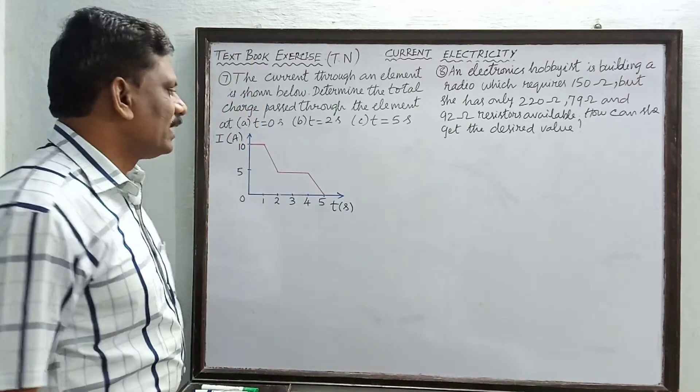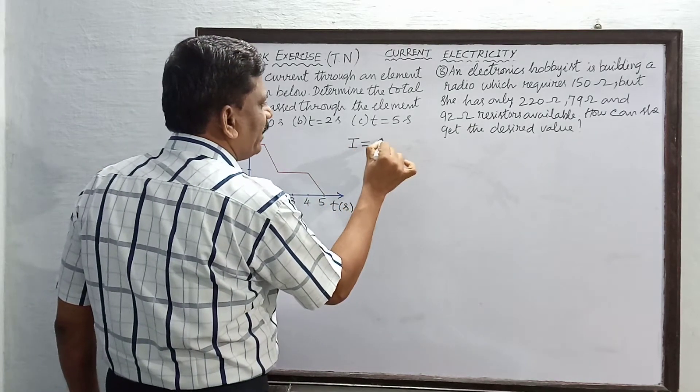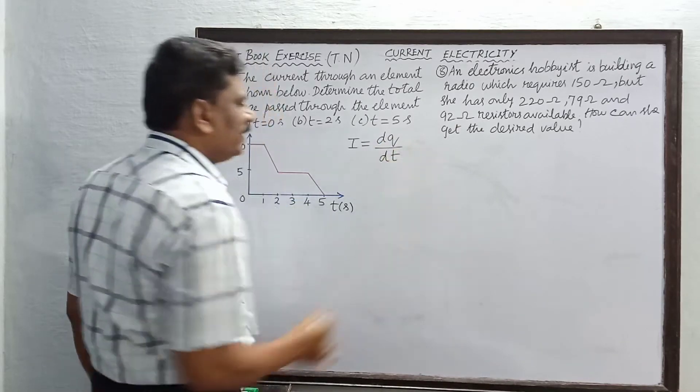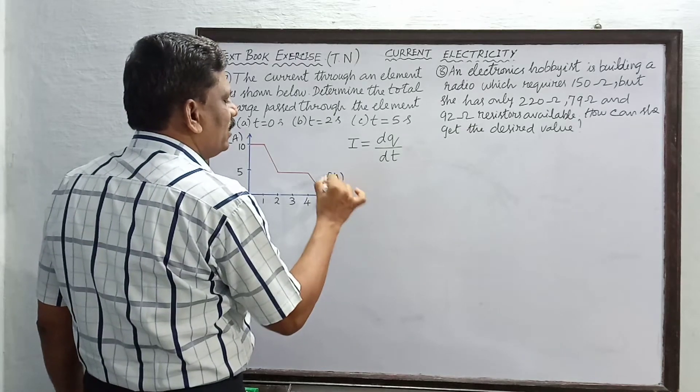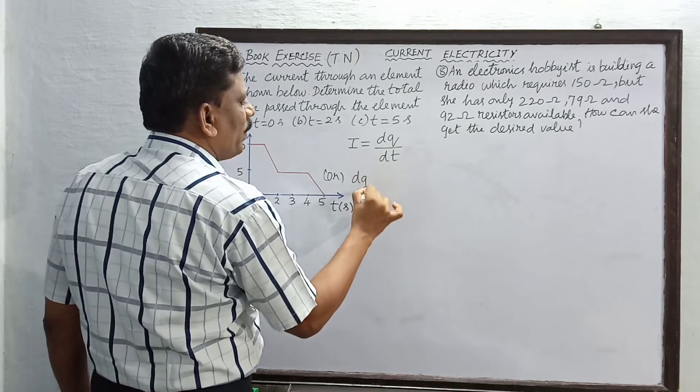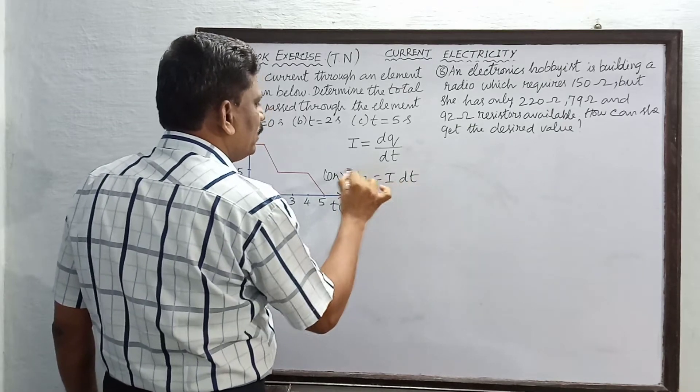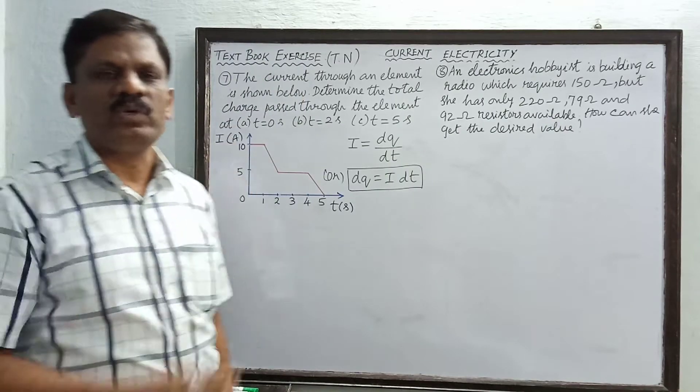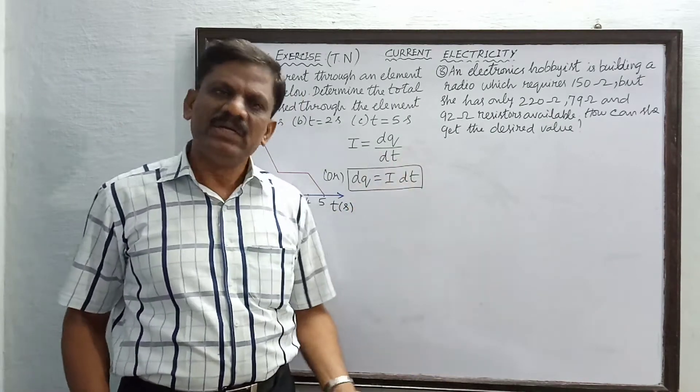Now, the current is defined as the rate of flow of electric charges. So i equals dq divided by dt. From this equation, we can write dq is equal to i into dt. When variable charges flow through a conductor, this equation dq equals i into dt can be used.